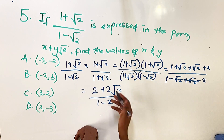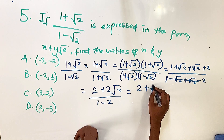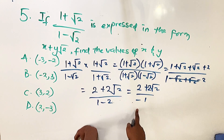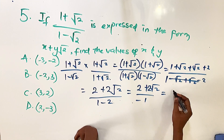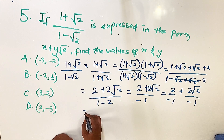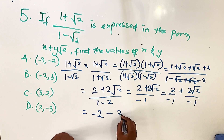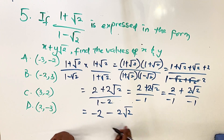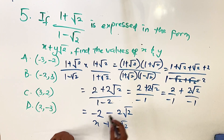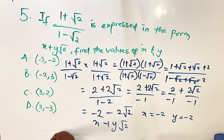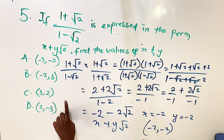The denominator simplifies to 1 minus 2, which is minus 1. The numerator: 1 plus 2 is 3, and root 2 plus root 2 is 2 root 2, giving 3 plus 2 root 2. So we have (3 plus 2 root 2) over minus 1. Dividing each term by minus 1 gives minus 3 minus 2 root 2. Comparing to x plus y root 2, we get x equals minus 3 and y equals minus 2.